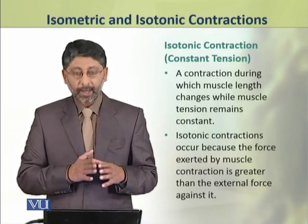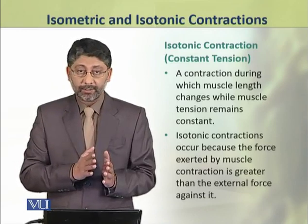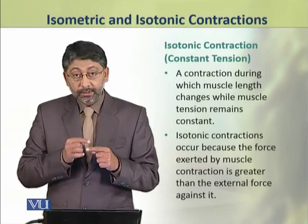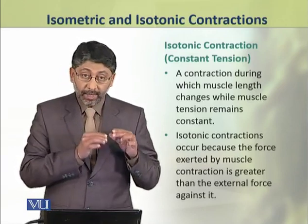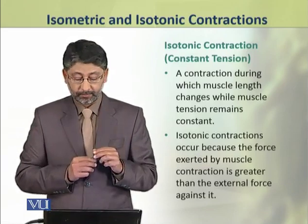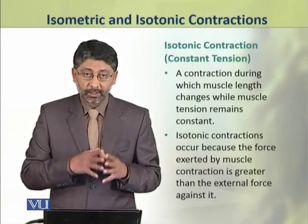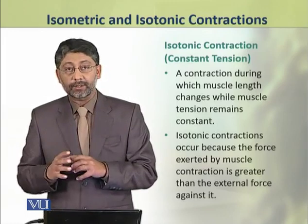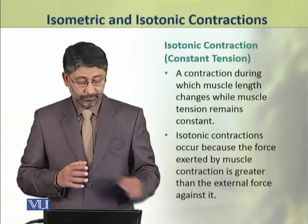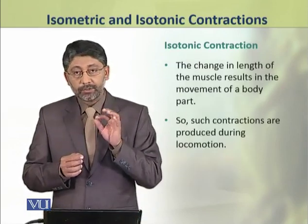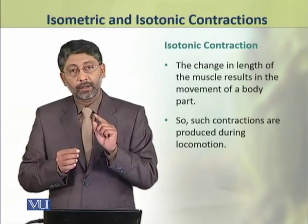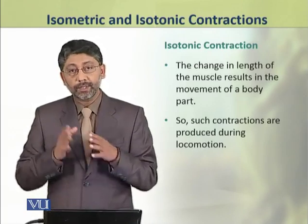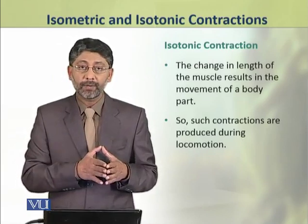Iso means same or constant, and tonic means tension — that is, such contractions in which the tension remains constant. During these types of contractions, the tension remains constant but the length changes. These isotonic contractions occur when the muscle exerts force that is greater than the external force acting on it. The change in length of the muscle results in the movement of body parts, particularly the bones. So, such contractions are produced during the movement of body parts and locomotion.